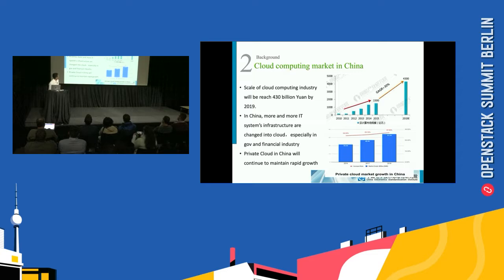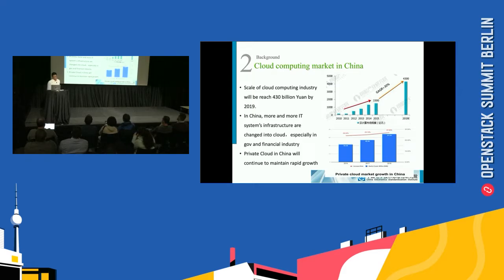Now I come to show the cloud computing markets in China. It is estimated that by 2090, the scale of the cloud computing industry will reach 430 billion yuan in China. More and more IT system infrastructures are moving into cloud, especially in government and financial industries, and private clouds in China will continue to maintain rapid growth.